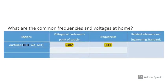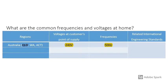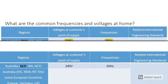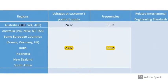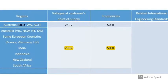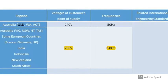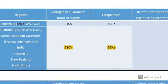Some parts of Australia have 240 volt 50 hertz electricity, but Queensland is moving from 240 to 230 volt. 230 volt and 50 hertz electricity is available in many European countries, India, Indonesia, New Zealand, and South Africa.